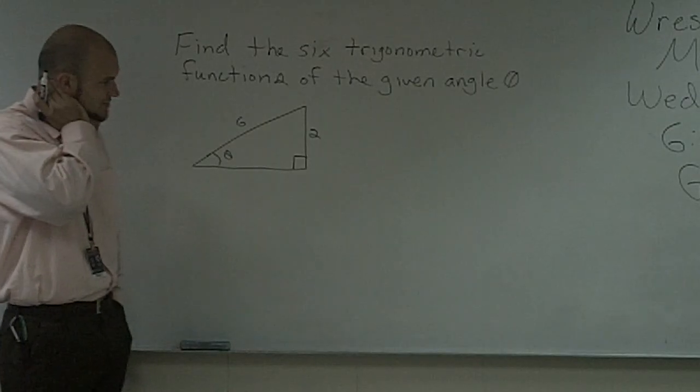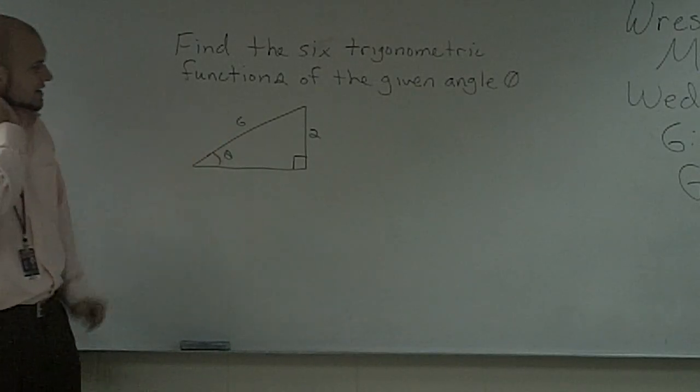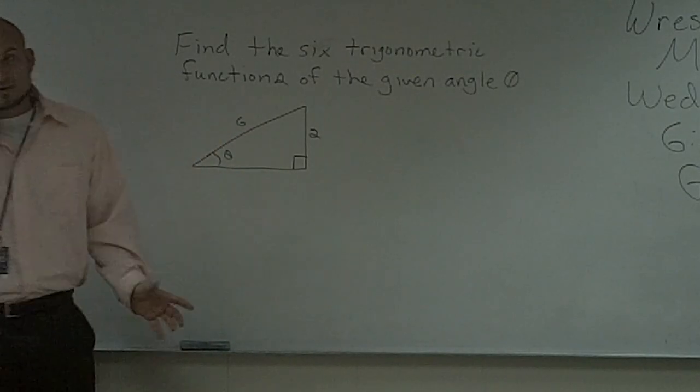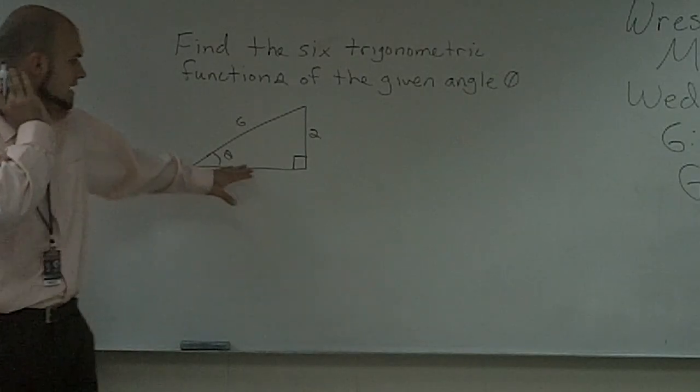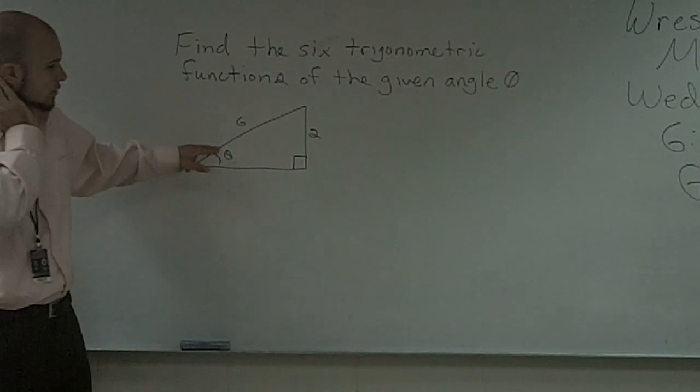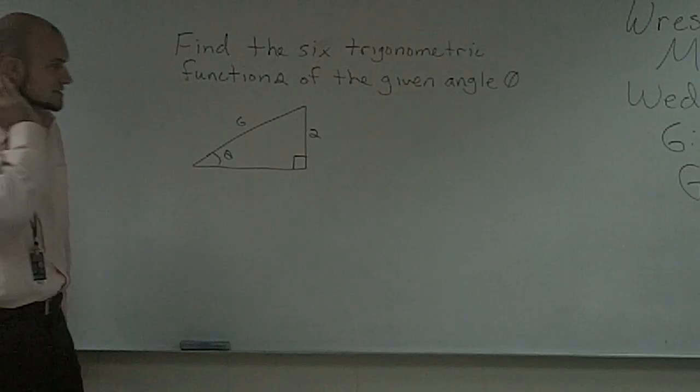This will be a little review from geometry. When given a right triangle, we automatically know we can always use the Pythagorean theorem. Right now, we have a missing side, and in accordance to theta, that is going to be our adjacent side.